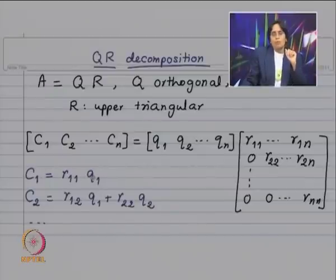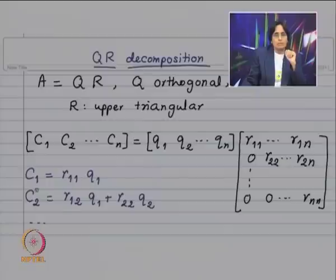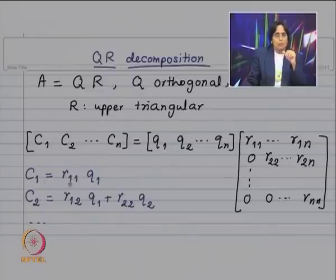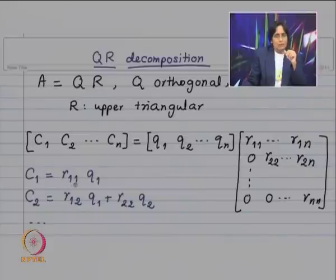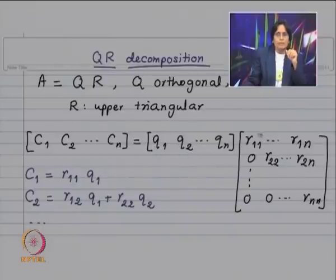So modulus of r11 equals the norm of C1. Thus for r11 we have a choice: you can either choose it to be plus norm of C1 or minus norm of C1. So we have determined r11. Once you determine r11, Q1 is going to be C1 divided by r11. So you have determined Q1 and you have determined r11.